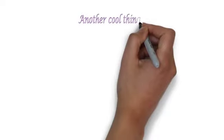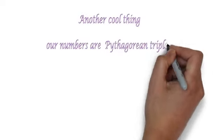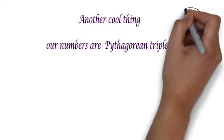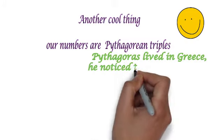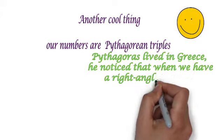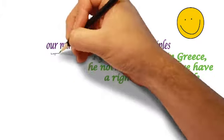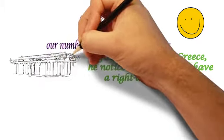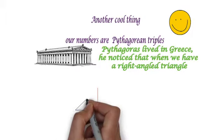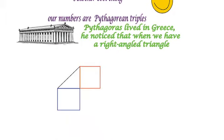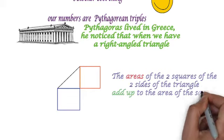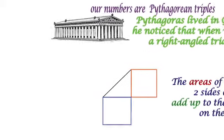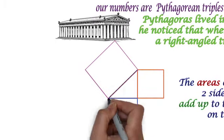Another cool thing, our numbers that we chose for you are Pythagorean triples. Pythagoras lived in Greece, and he noticed something really amazing, that when we have a right-angled triangle, here's a picture from Greece. The areas of the two squares on the two sides of the triangle add up to the area of the square on the hypotenuse. Always with any right-angled triangle.